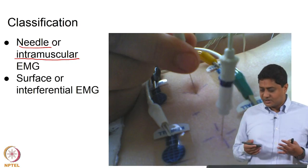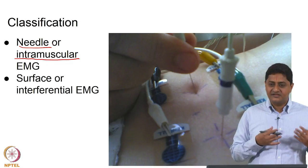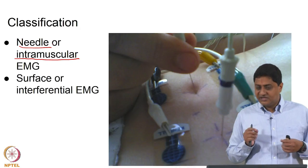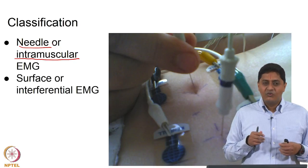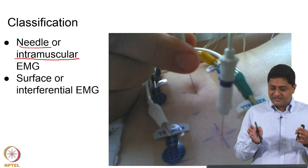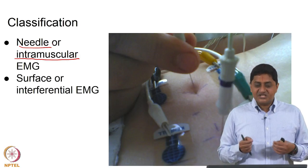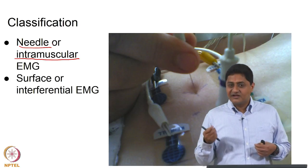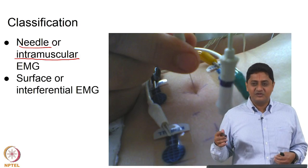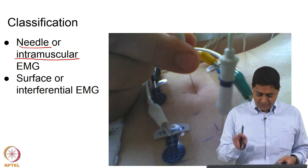Ethical considerations come into picture the moment you want to put something inside a person's body. The ethics committee wants to know what scientific achievement justifies putting people through such pain. There is validity in that question — you cannot put people through pain and get nothing out of it; there must be reasonable scientific justification for the discomfort faced by subjects. There are 10 to 15 people who sit and check whether what you are doing is actually worth doing.